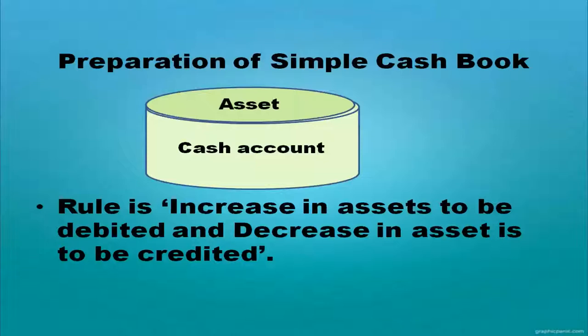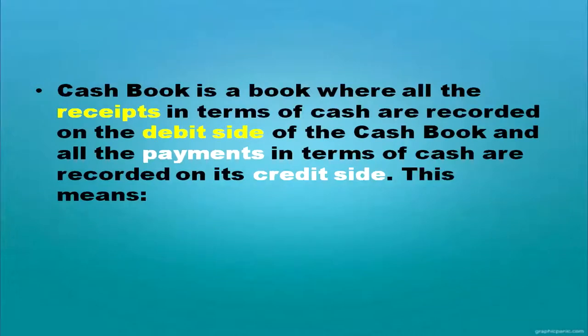Which rule do you follow while recording cash? Cash is an asset, so it comes under the asset account. We have already studied that capital, asset, revenue, expenses, and liability are the main types of accounts. Cash is included in the asset account. The rule for the asset account is: increase in asset will be debited and decrease in asset will be credited.